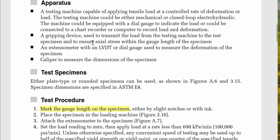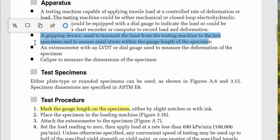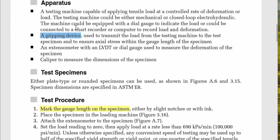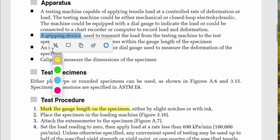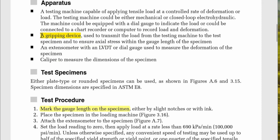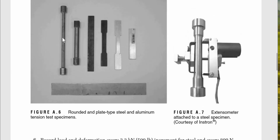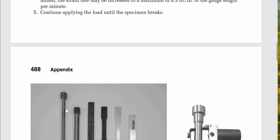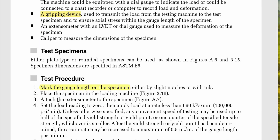A gripping device is used to transmit the load from the testing machine to the test specimen and to ensure axial stress within the gauge length. This is different from the compression test because here we need a gripping device that grips the element from above and below, ensuring that the tensile load passes through the main body of the specimen.